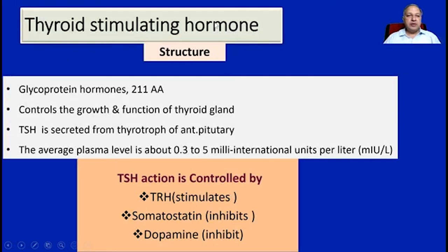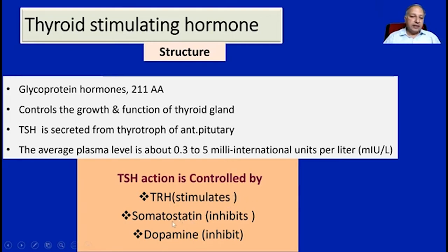Coming to the next hormone: thyroid stimulating hormone, or TSH. Structurally, it is a glycoprotein with 211 amino acids. It controls the growth and function of the thyroid gland and is secreted from the thyrotrophs of the anterior pituitary. The average plasma level is 0.3 to 0.5 milli-international units per liter. TSH action is controlled by thyroid releasing hormone released from the hypothalamus, with inhibitory control via somatostatin and dopamine.